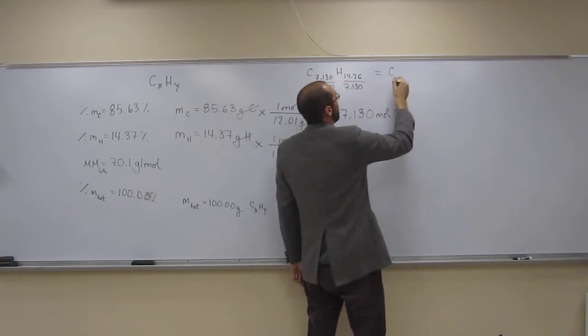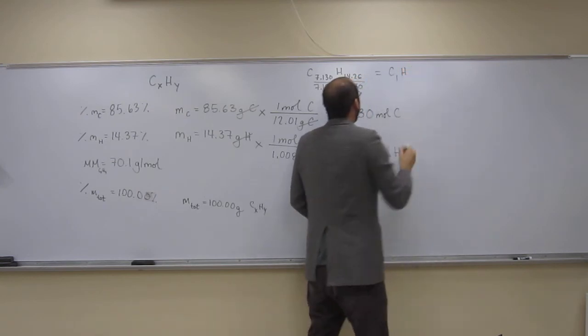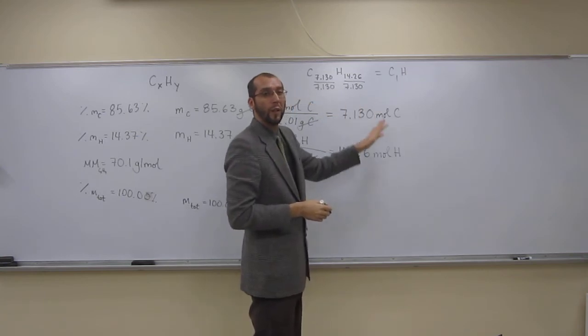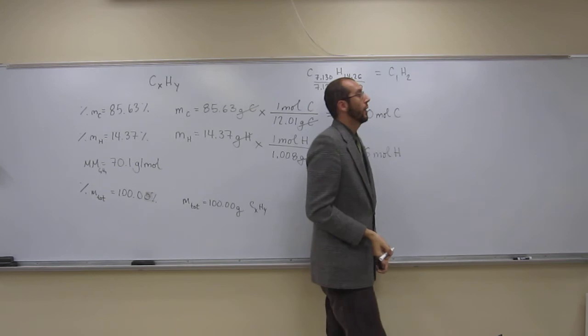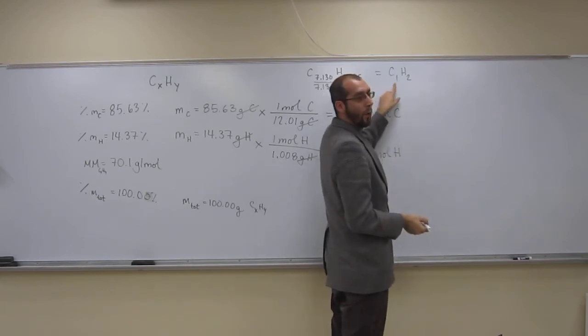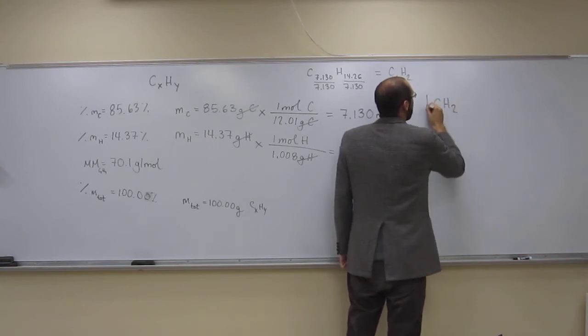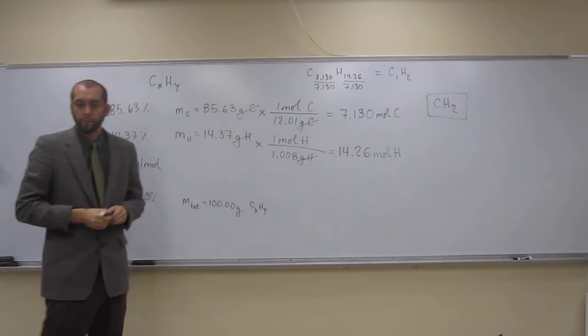7.130 divided by 7.130 is 1. And then H, if you can't see that, that's going to be almost 2. It's going to be like 1.999999. So, we're going to say 2. But we don't write C1, so the empirical formula is going to be CH2. You're fine with doing that? Yes.